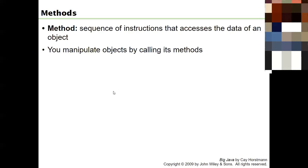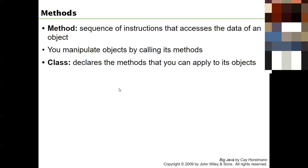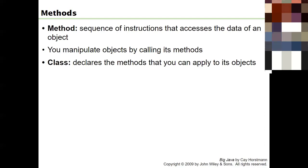You can manipulate an object by calling its methods. Say you wanted to change the number of chocolate chips in your cookie object - perhaps there's a method called addChips where you say how many more chips to add. A class declares the methods you can apply to its objects, so all PrintStreams have a println method and a print method. The methods belong to the class; the data belongs to each individual object.